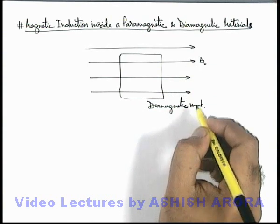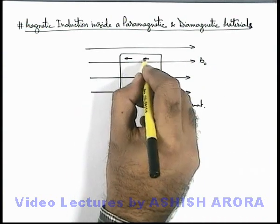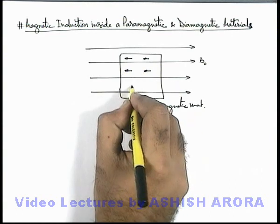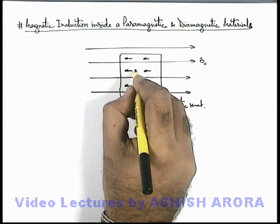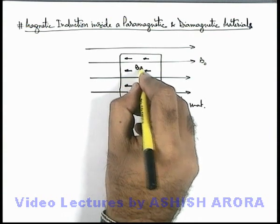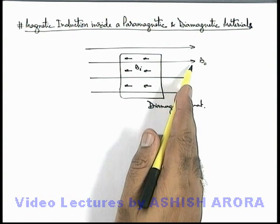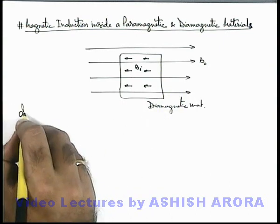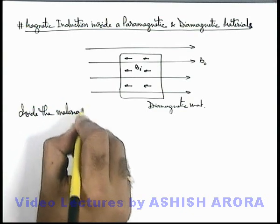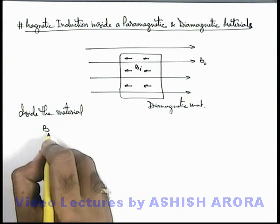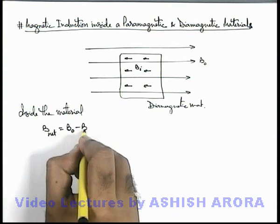In a diamagnetic material, when an external field is applied, the dipoles are induced in the material in the direction opposite to that of the external field. So the magnetic induction which is induced, say Bᵢ, is in opposition to the external field. So inside the material, B_net will be equal to B₀ minus Bᵢ.